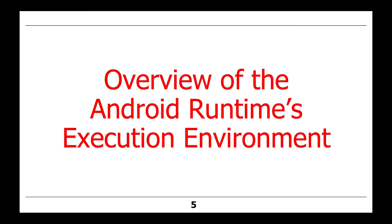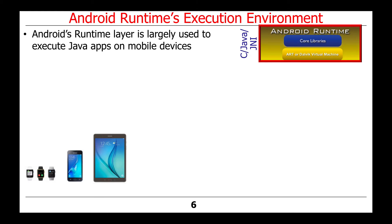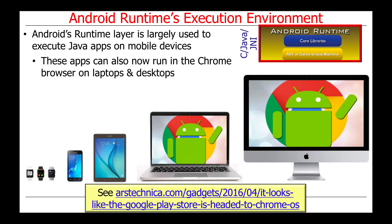Let's start by giving an overview of Android's Runtime Execution Environment. Android's Runtime layer is largely used to execute Java apps on mobile devices, including tablets, phones, and various types of wearables. Moreover, it's also possible to use this Runtime layer to implement apps in the Chrome browser on laptops and desktops, which is a relatively new addition to the Android Runtime infrastructure.